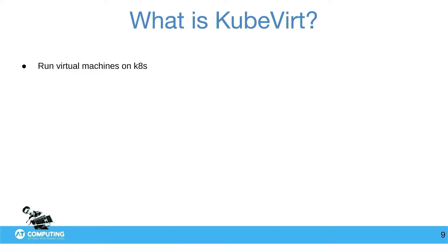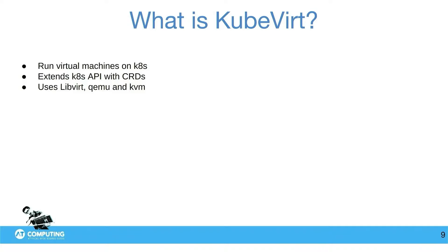What is KubeVirt? It basically runs your virtual machines on Kubernetes — that's the short version. It extends the Kubernetes API to use CRDs, so you can use virtual machines, virtual machine snapshots — everything is a custom resource in Kubernetes. It uses LibVirt, QEMU, and KVM. And you can run containers alongside virtual machines, so you can have a mixed cluster for mixed workloads.